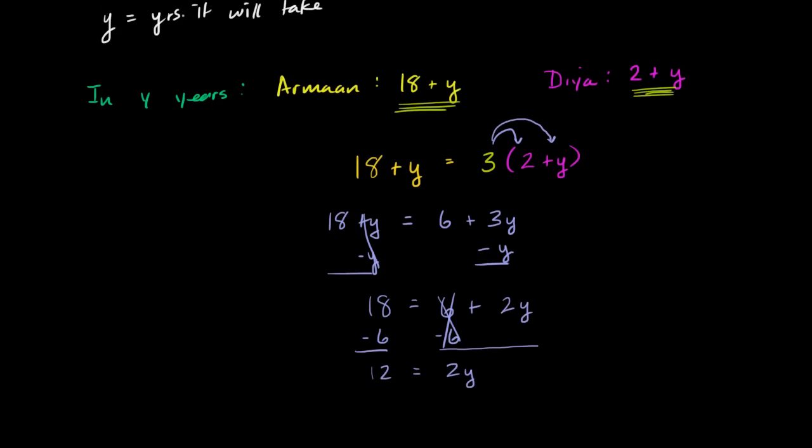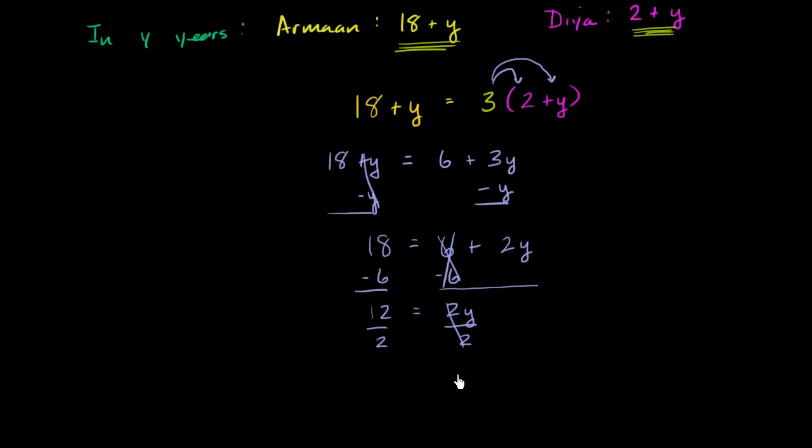Two times the number of years it will take is 12. And you could probably solve this in your head. But if we just want a one coefficient here, we would divide by two on the right. Whatever we do to one side of the equation, we have to do it on the other side. Otherwise, the equation will not still be an equation. So we are left with y is equal to six.